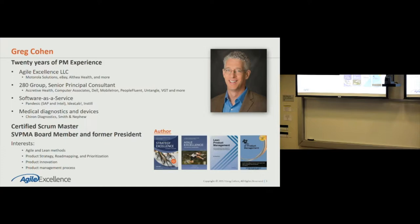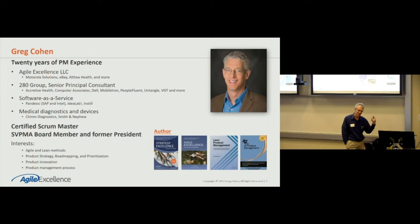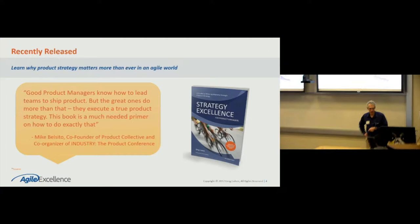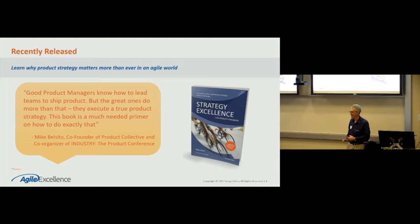My own background real quick: 20 years in product management, originally in med devices and diagnostics. Then I came out to Silicon Valley from the East Coast and got involved in early software-as-a-service. Spent a decade with 280 Group consulting companies. The great thing about consulting is you see so many different contexts — you get hired where you'd never be hired as a product manager because you don't have domain experience. More recently I've been consulting under my own banner, Agile Excellence LLC, which was the name of my first book in 2010. I recently released Strategy Excellence, to address what I saw as an unintended consequence in the Agile world — that teams were taking too much advantage of Agile flexibility and not doing the hard work on strategy planning.